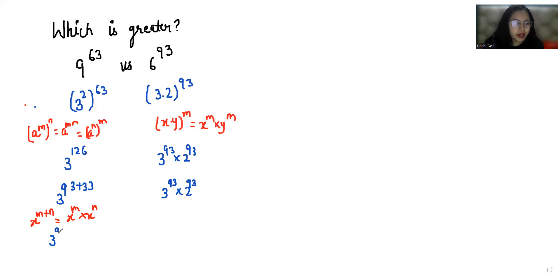So we get 3 power 93 times 3 power 33, and here 3 power 93 times 2 power 93. Now if we compare both sides, we can eliminate 3 power 93 and only compare these two terms.